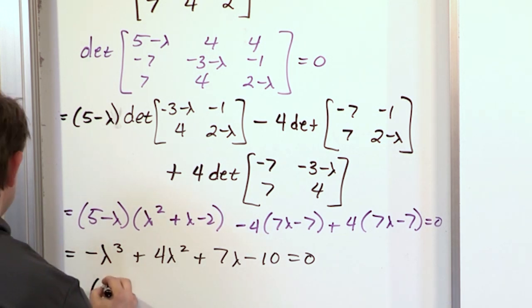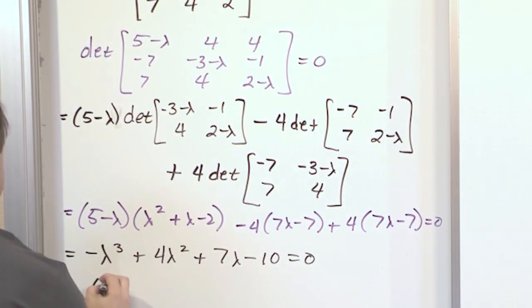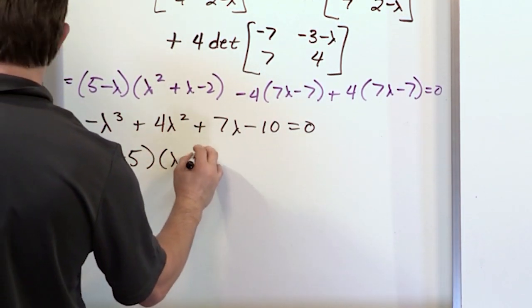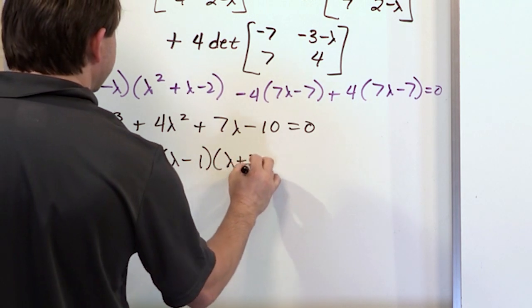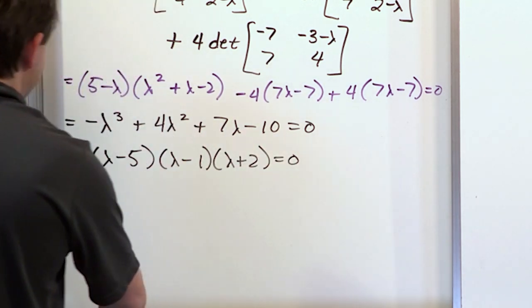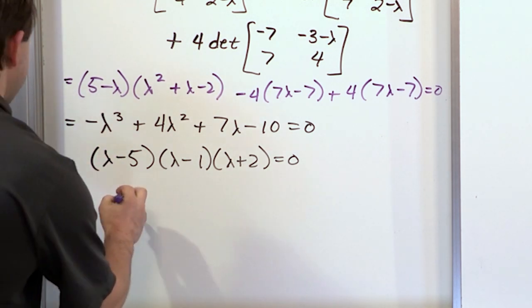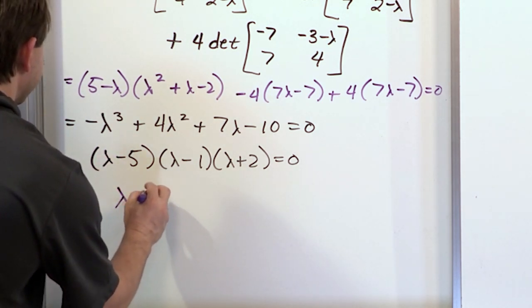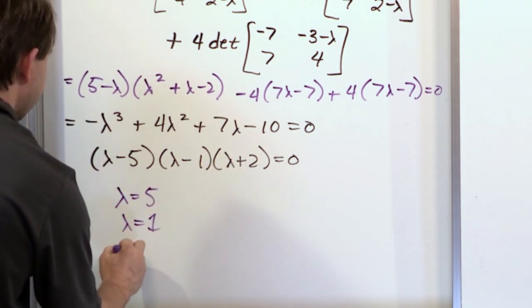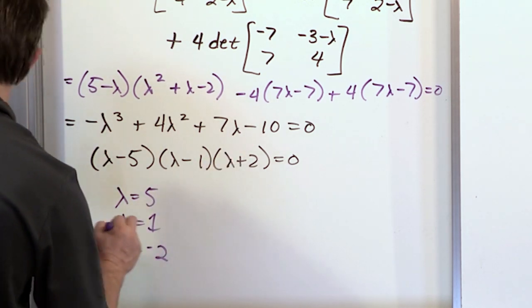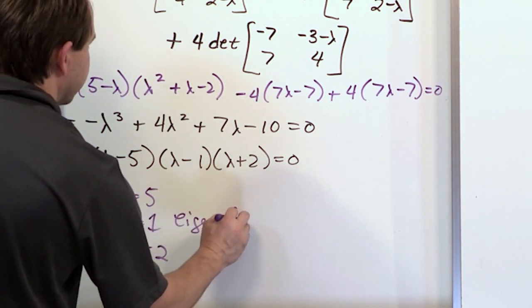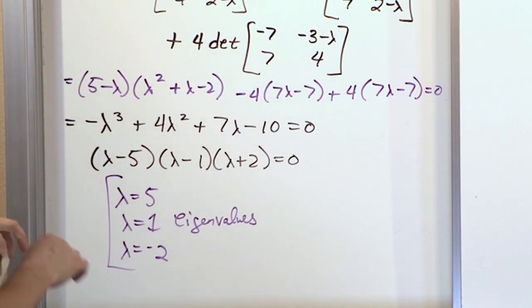It turns out you can factor this. It'll be lambda minus 5, lambda minus 1, lambda plus 2. Lambda is going to be positive 5, lambda is 1, and then lambda is negative 2. These are the three eigenvalues.